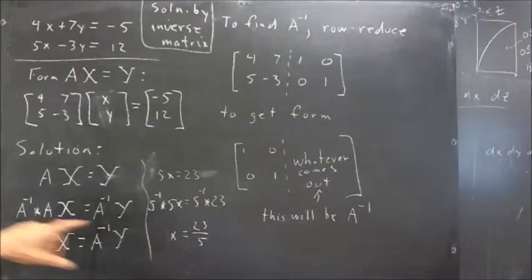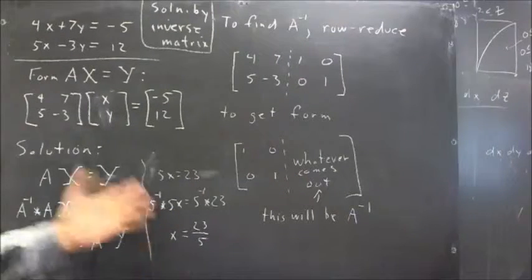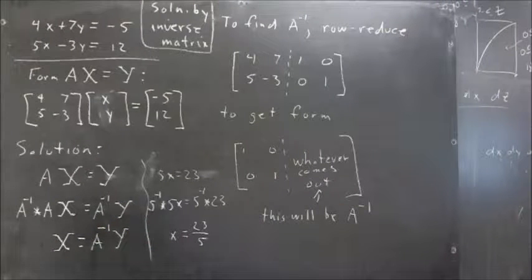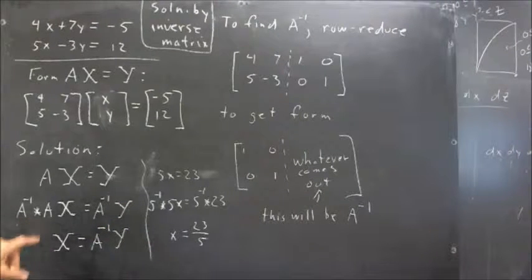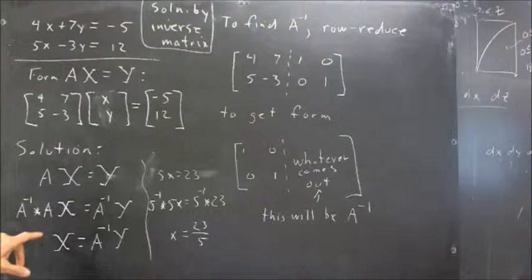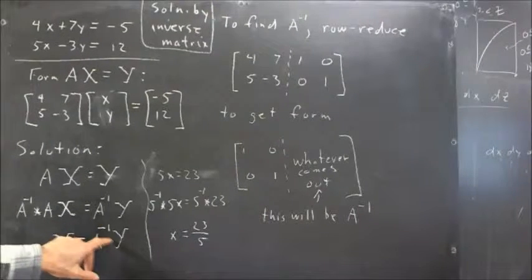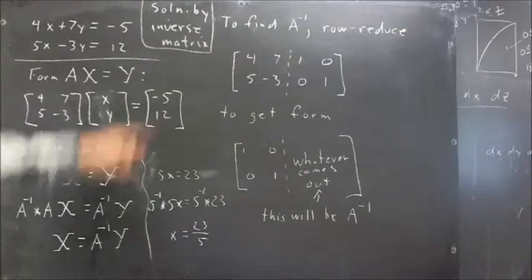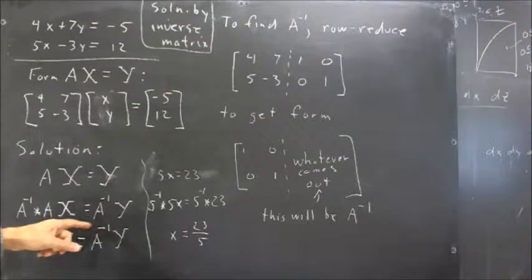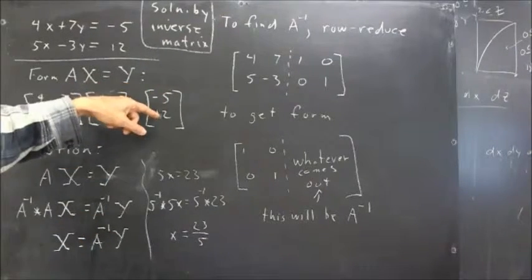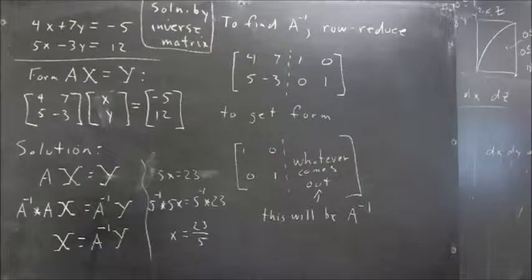By analogy, 5 to the negative 1 times 5 gives you the identity, which multiplied by X is just X. This times this gives you the identity, and when you multiply the identity by X, you just get X. On the right-hand side, you have an inverse times Y. Now, Y is just a column vector. If we had an inverse matrix, we'd be able to multiply it by that column vector and get a result.